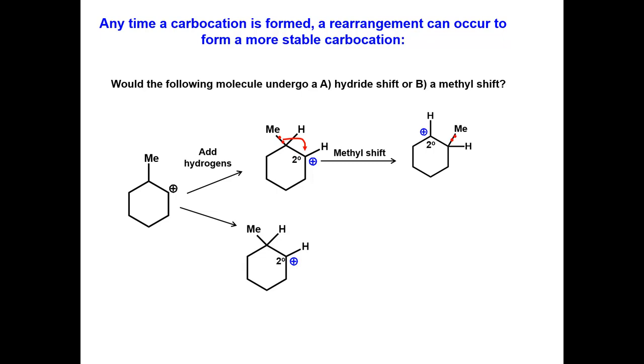Now try the hydride shift or migration. This produces the more stable tertiary carbocation. Thus this molecule would undergo a hydride shift to form the tertiary carbocation.